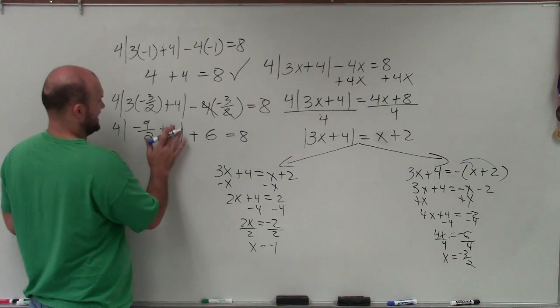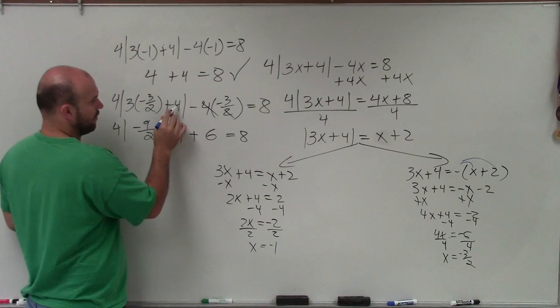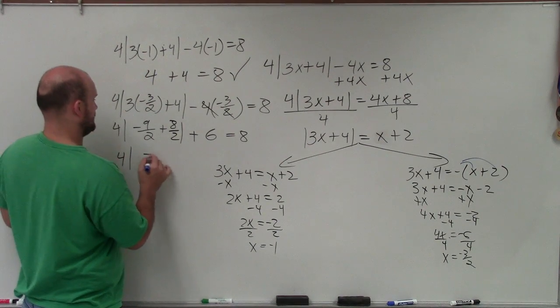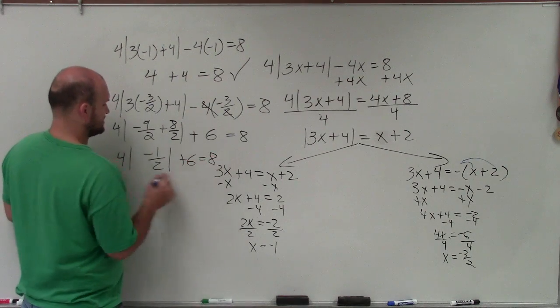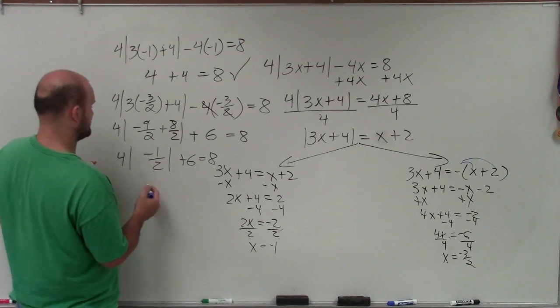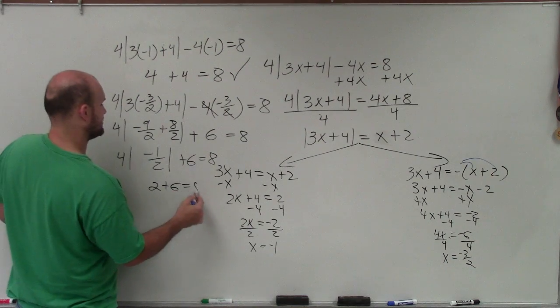This is really 8 over 2, right? 4 when written as a fraction is 8 over 2, so it's 4 absolute value of negative 1 half plus 6 equals 8. Well, negative 1 half, the absolute value of negative 1 half is positive 1 half. Positive 1 half times 4 is just going to leave you with 2 plus 6 equals 8.